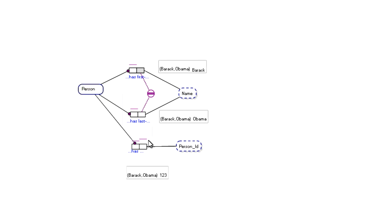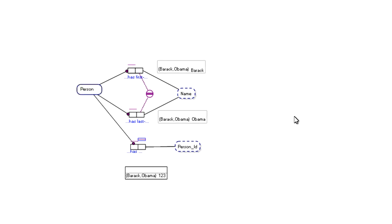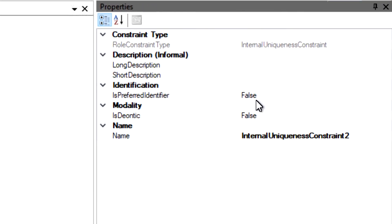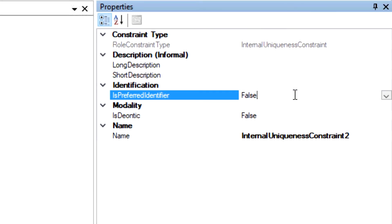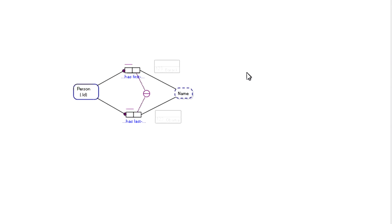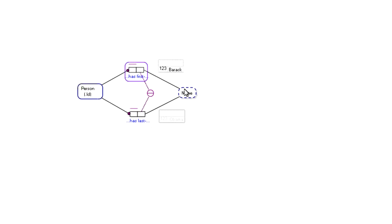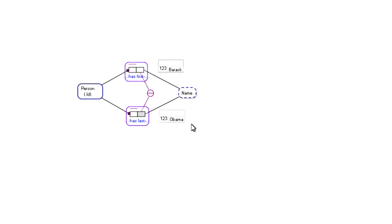So we can change it back now to person ID being the reference scheme, by changing the 'is preferred identifier' in the properties. We can see now that person with ID 123 has first name Barack, and person with person ID 123 has last name Obama.